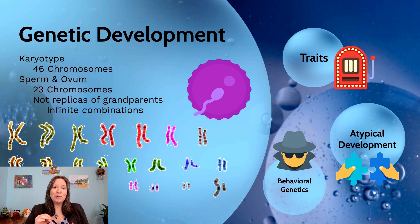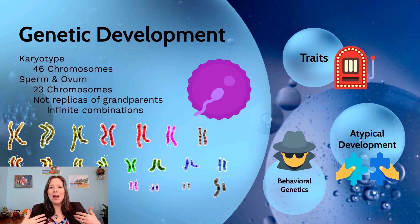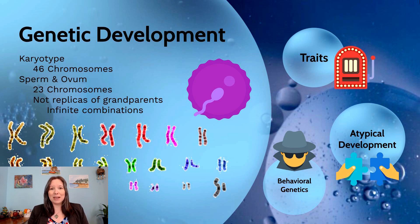It's important to stress that the 23 chromosomes that make it into each sperm or each ovum are not going to be the 23 chromosomes you receive from one parent or the other. Your chromosomes in these specialized cells are not going to be replicas of the grandparents who gave them to you. The cellular processes can actually lead to infinite combinations of chromosomes in each ovum or sperm, meaning there could be infinite possibilities for the genome in the next generation.